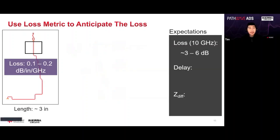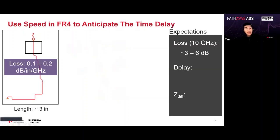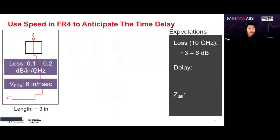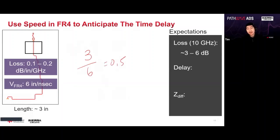The second thing we're going to do is find out the time delay. We'll use the propagation speed metric, which is 6 inches per nanosecond. The trace length is 3 inches divided by 6, which is about half a nanosecond — shown on the right-hand side: the delay is approximately 0.5 ns.